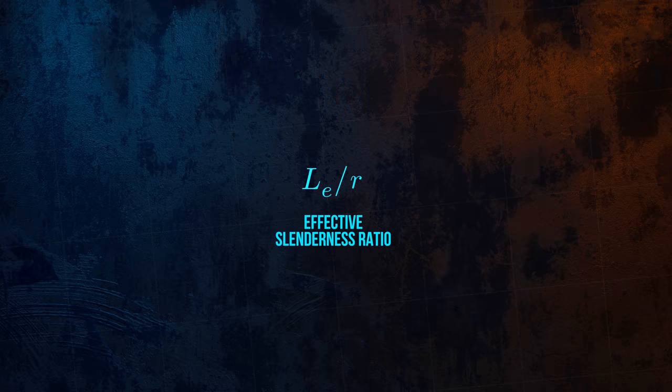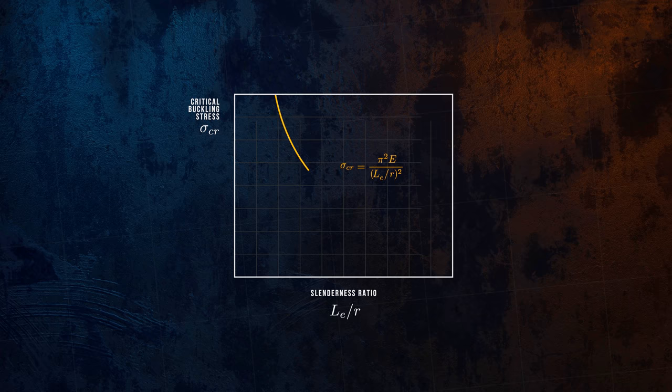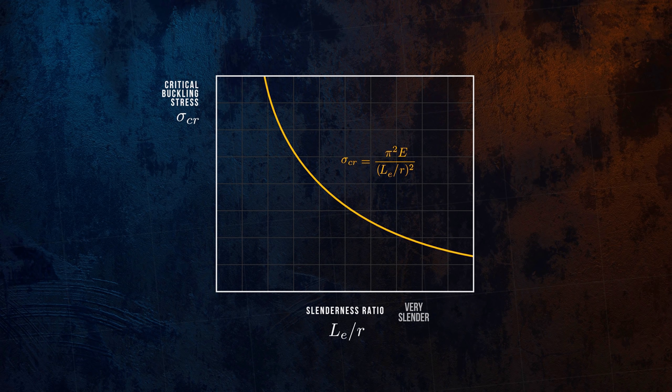Let's take a look at how the Euler critical buckling stress varies with the slenderness ratio. Very slender columns have a large slenderness ratio and a very low critical buckling stress. For stocky columns with low slenderness ratios, the critical buckling stress will be very large.